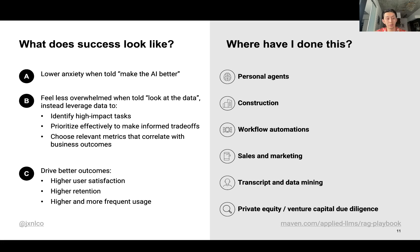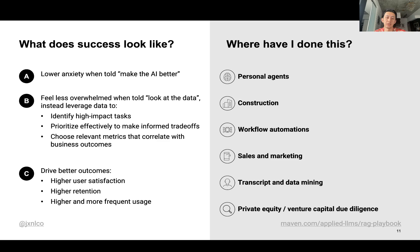It frees up mental energy for experimentation and creativity. My goal is for people who take this course to feel less anxiety when told the AI is bad — can you make it better? When you see people on Twitter say the solution is to look at your data, you'll understand what that actually means, identify high-impact tasks, prioritize effectively, make good trade-offs, and ultimately choose the right metrics. As a result of these improvements, you'll have higher user satisfaction and generate more data and feedback to quickly improve this cycle.